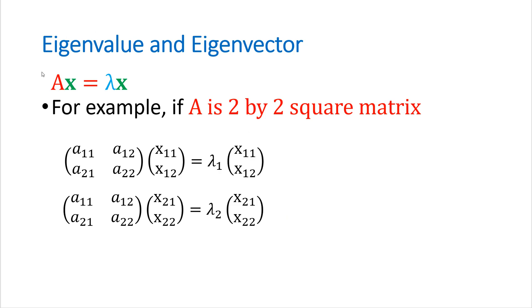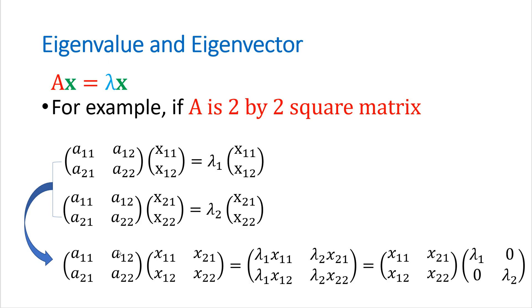So eigenvalue and eigenvector, let me give you an example. So if A is 2 by 2 square matrix, and there is lambda 1 and lambda 2 eigenvalue here, we can think of this form. So we can rewrite these two equations as one equation.